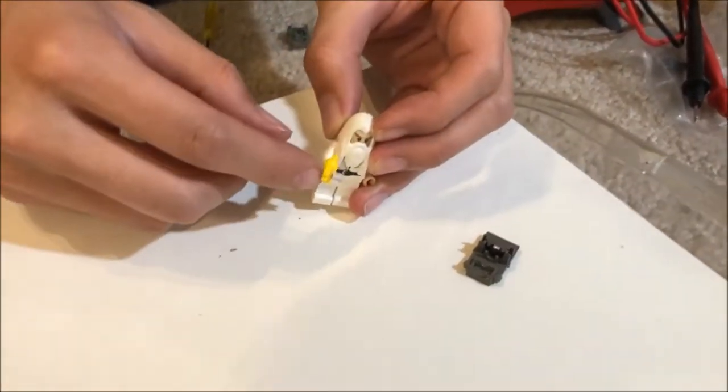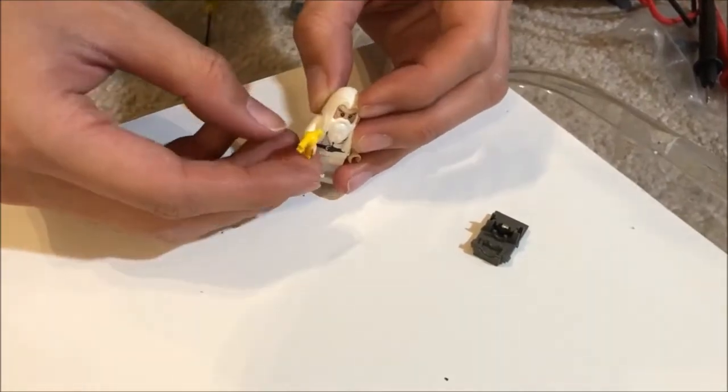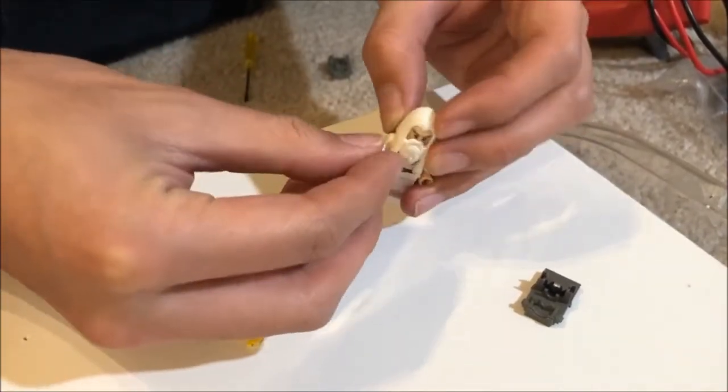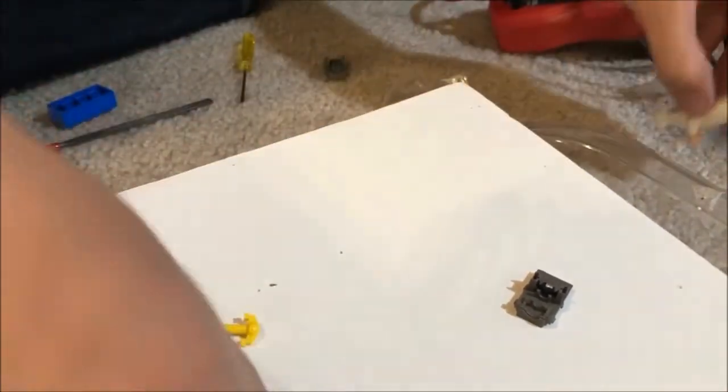Perhaps you can use the yellow bumper as a greeble. They apparently fit minifig hands, and therefore most clips, though they don't quite seem to have the standard LEGO geometries.